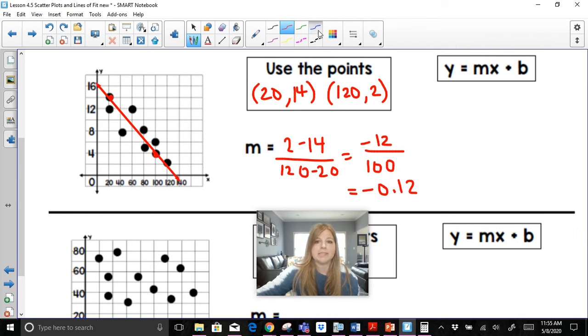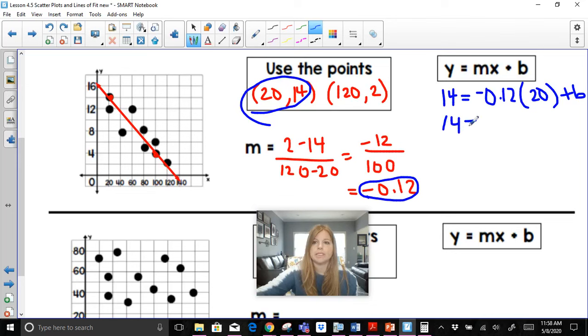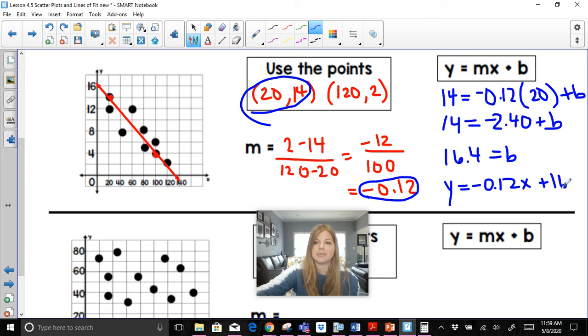So now I take that slope and either ordered pair. It does not matter to solve for B. So 14 equals negative 0.12 times 20 plus B. So now this becomes 14 equals negative 240 plus B. Let's go ahead, add 240 on both sides and we get 16.4 equals B. So our equation is Y equals negative 0.12 X plus 16.4. Awesome.